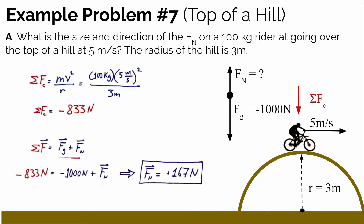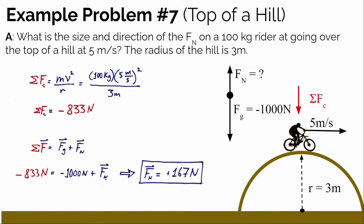To solve for the normal force, we add up all the forces. The sum of forces in the y-direction equals the gravitational force plus the normal force on the rider. We found the net force must be negative 833 newtons, and the gravitational force is negative 1,000 newtons — which is larger in magnitude. That means the normal force must be positive. Solving for the normal force by adding 1,000 newtons to each side, we get that the normal force is only 167 newtons. So gravity pulls the biker down with 1,000 newtons, while the hill surface only pushes up with 167 newtons.